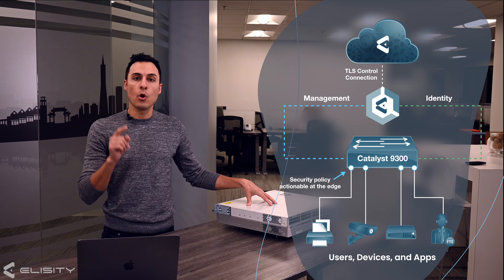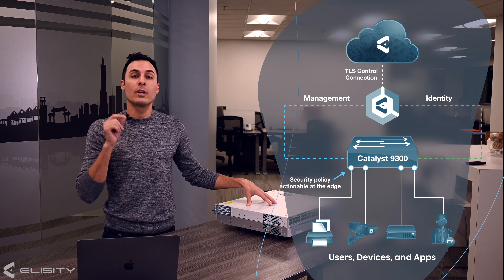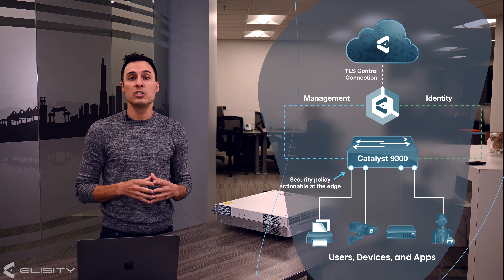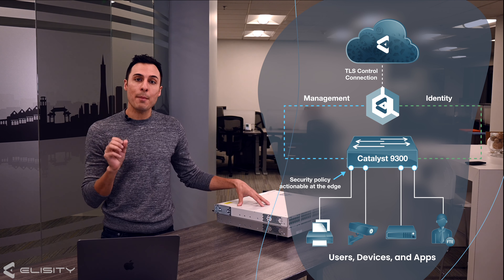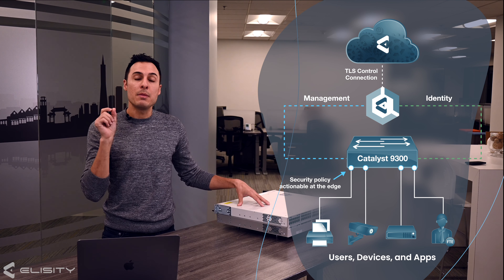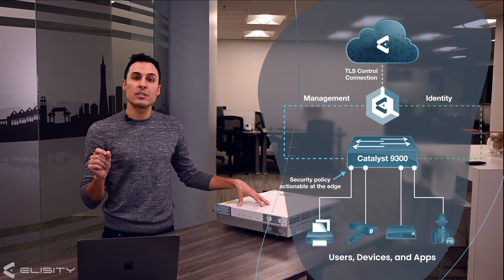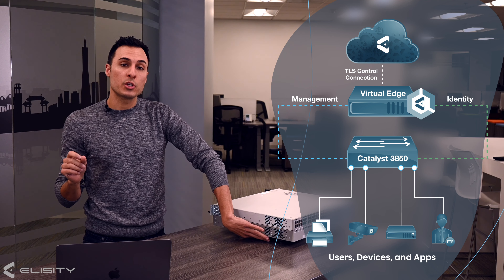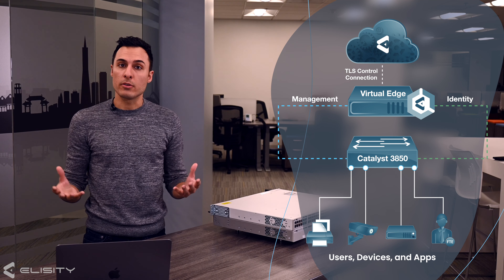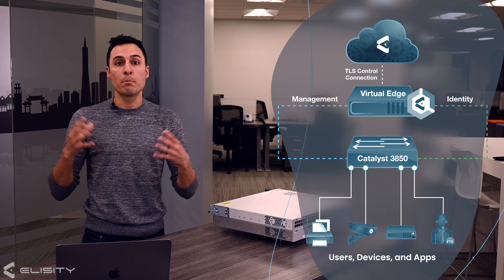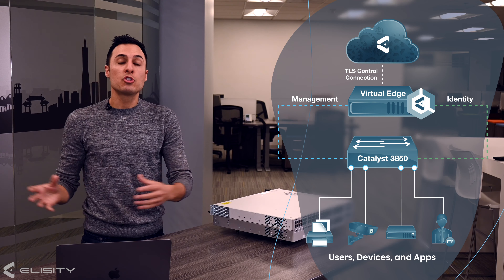This is what the architecture looks like at a high level. For the 9k, the MicroEdge application has two connections to the host switch in addition to its control connection to Cloud Control Center. The first connection is used for switch configuration management. The second connection is used so that the MicroEdge application can glean identity and the behavior of users, applications, and devices. For the 3850, the MicroEdge application doesn't run on the switch itself. It runs externally on a hypervisor as a virtual machine anywhere in your network. The same two connections are built from that virtual MicroEdge to the switch that's being managed.